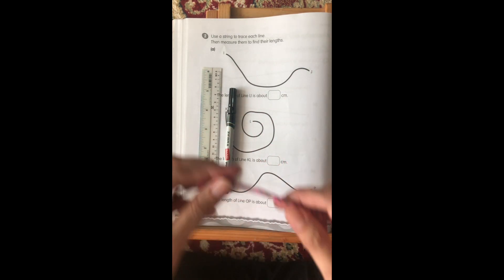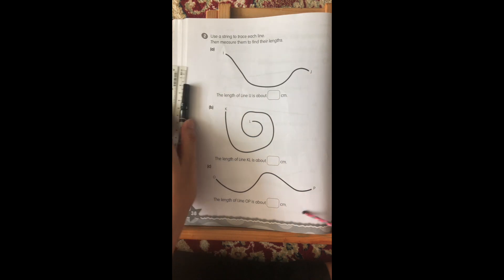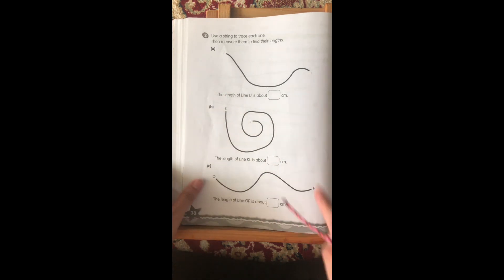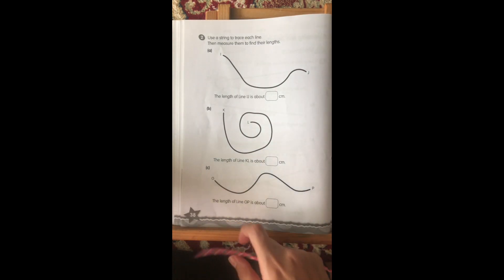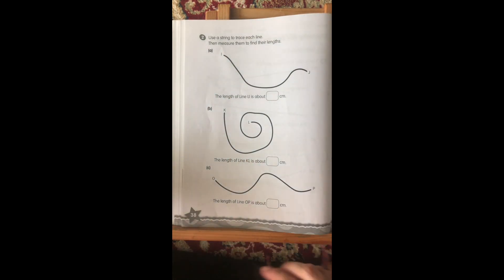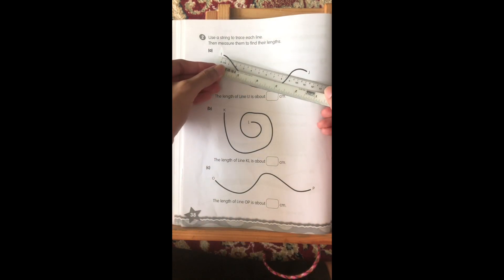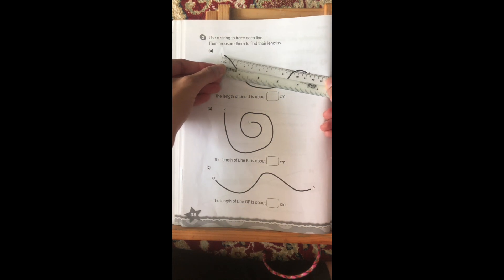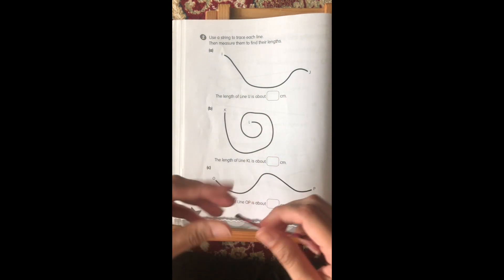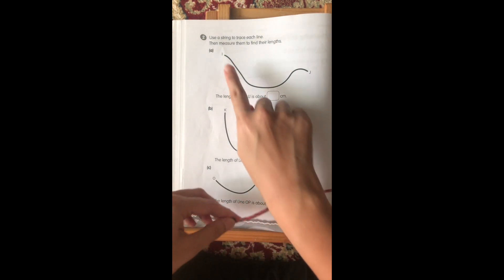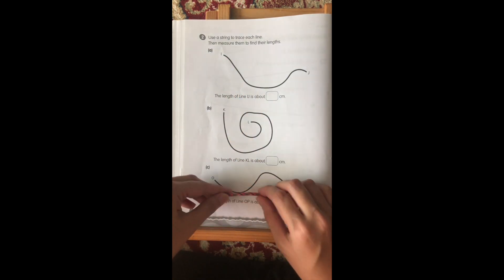Let's take a look at example A. Because it is a curved line, we are not able to measure the length of the line using a ruler. You see, it doesn't fit. So, we are going to use a string. At the beginning, you see where I is. That is the first point.